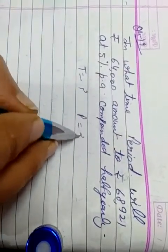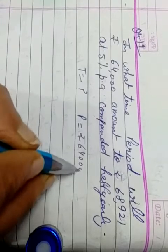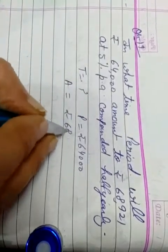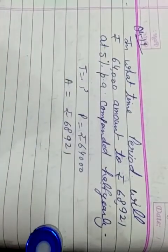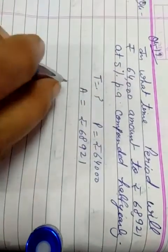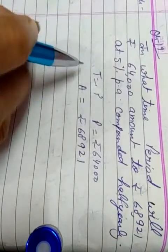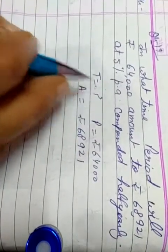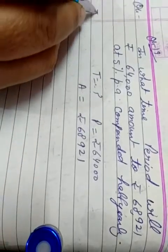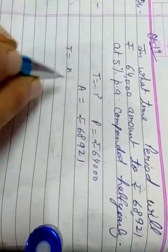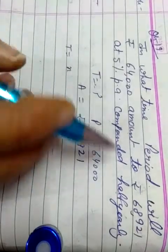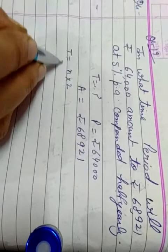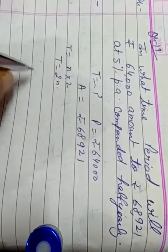P is equal to rupees 64,000 and amount is equal to rupees 68,921. Now compounded half yearly, it means time multiplied by 2. T is equal to N, but because it is compounded half yearly, we multiply by 2. So T is equal to 2N. We take 2N.